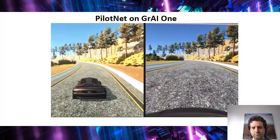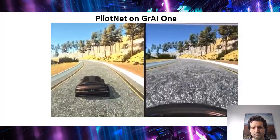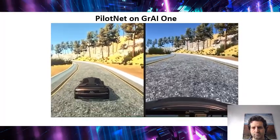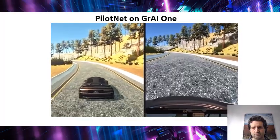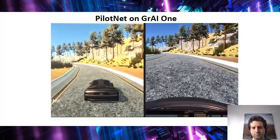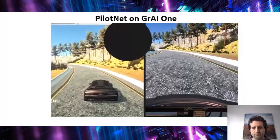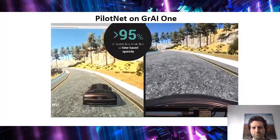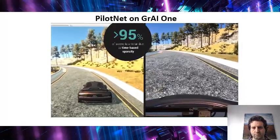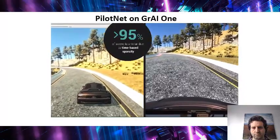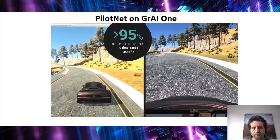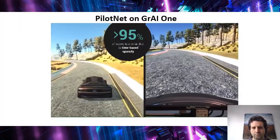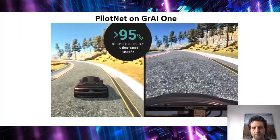As the car navigates this road, it is constantly updated with the steering information. As can be seen on the screen, more than 95 percent of the scene is relatively similar as the car moves on the road. This represents a real-world example of time-based sparsity.